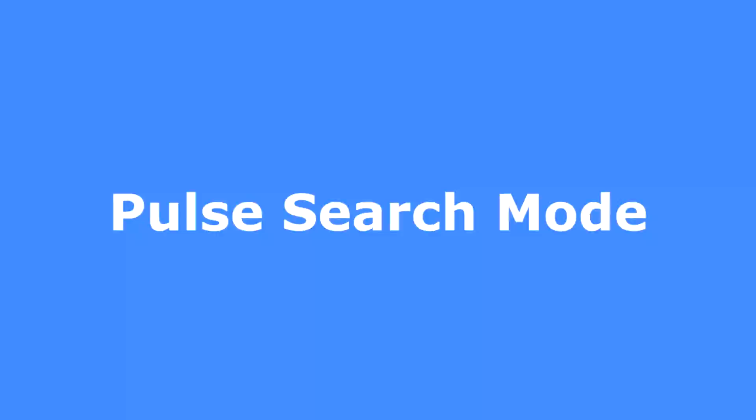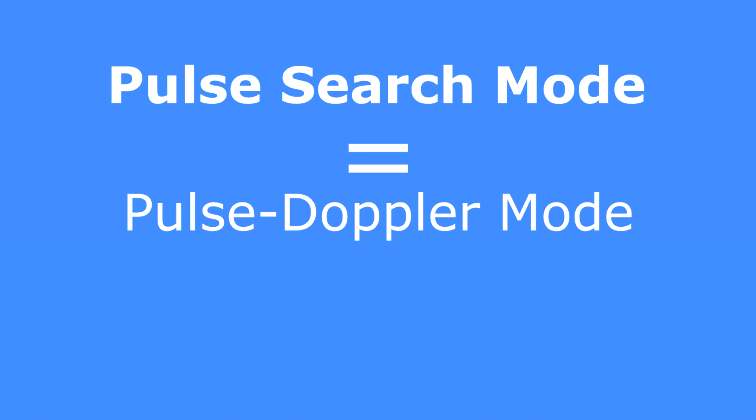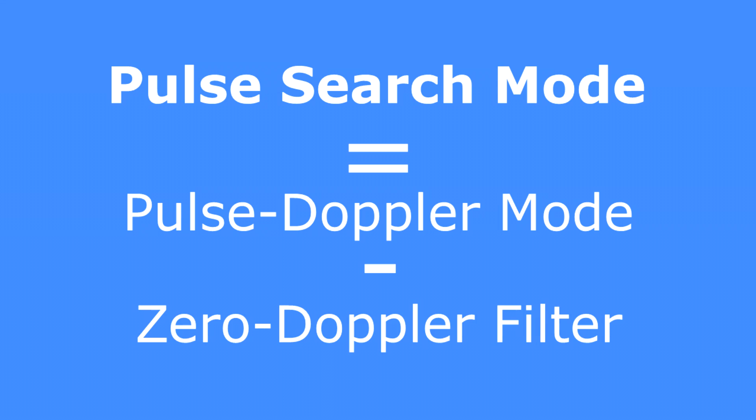Now that you know all about the science, you should have a grasp on what the weaknesses of Pulse Doppler mode are in the Tomcat. It's time we talk about Pulse mode. Take everything you know about Pulse Doppler mode, except remove the fact that the computer filters out ground returns, and you have Pulse mode. Pulse mode effectively eliminates the ability for people to notch your radar, as they will no longer be filtered out.